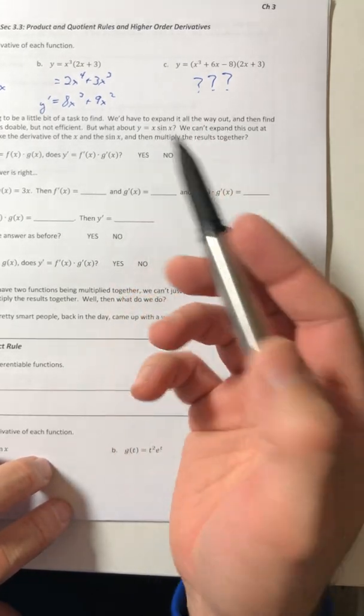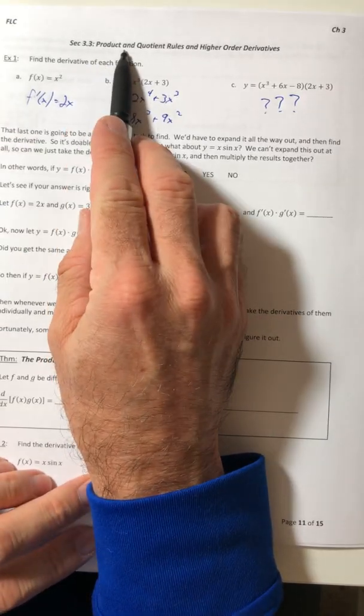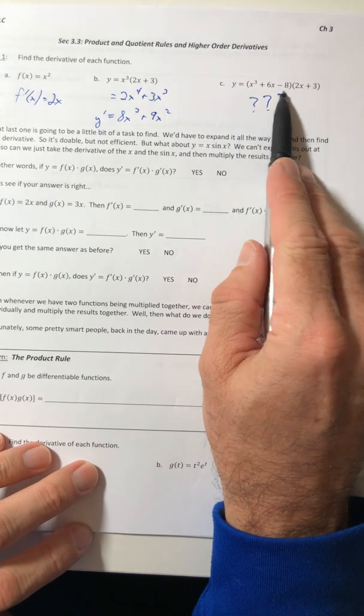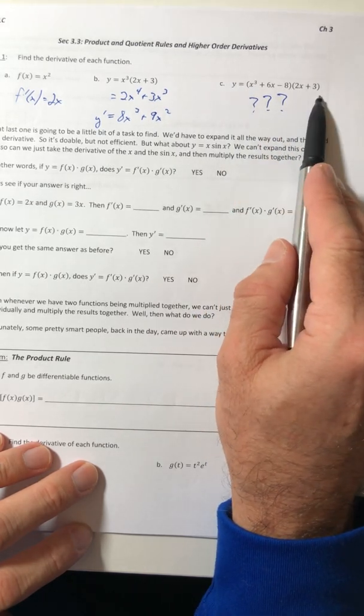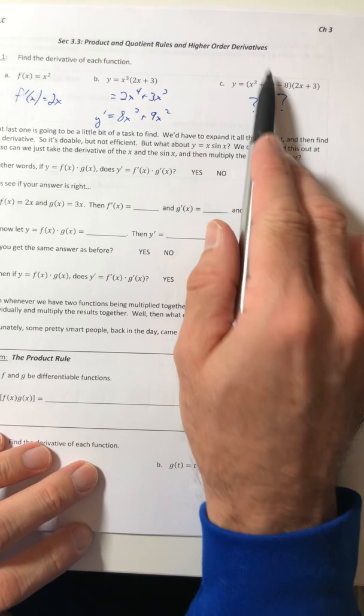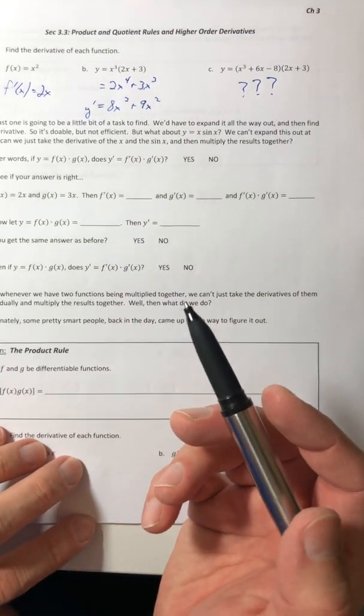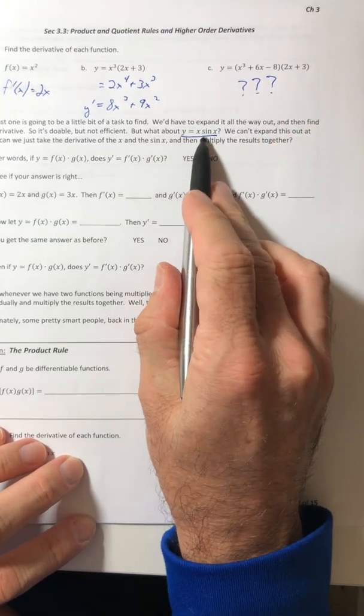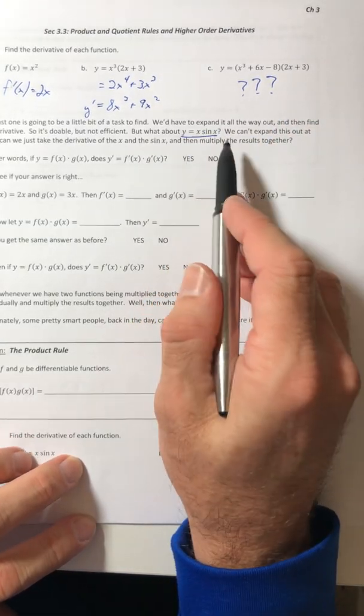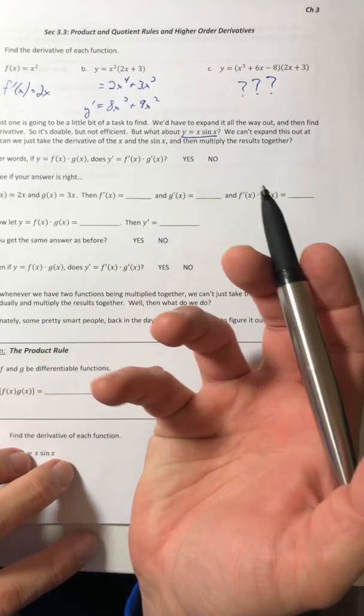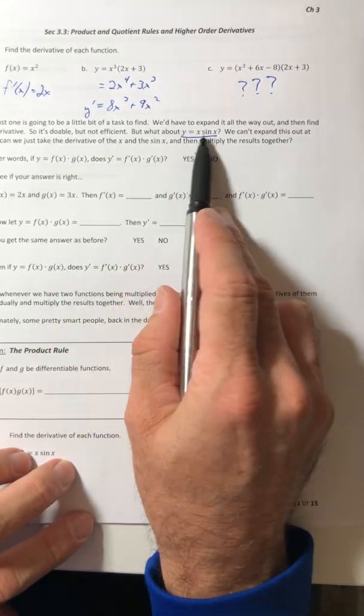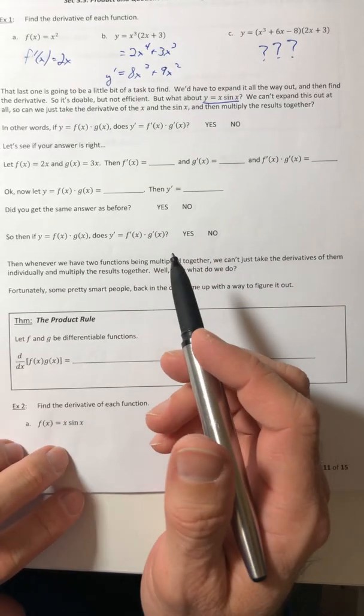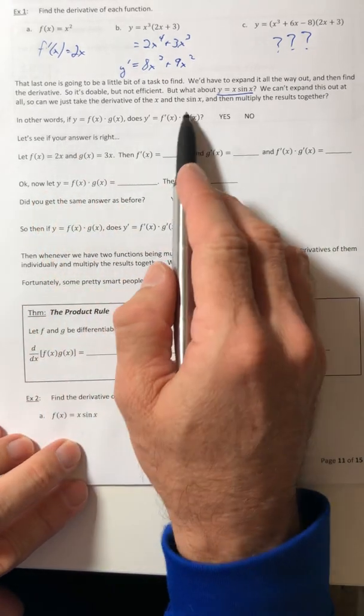And that's where the product rule is going to come into play because it's going to tell us how to find the derivative of an actual product. So this one we could actually find the derivative if we multiplied it out, where there's some functions where that can't happen. So like y equals x sin of x, you can't do anything with this. So you can't expand it. There's nothing to multiply. So how do you take the derivative of this guy? So let's kind of play around with it and see what we can do.